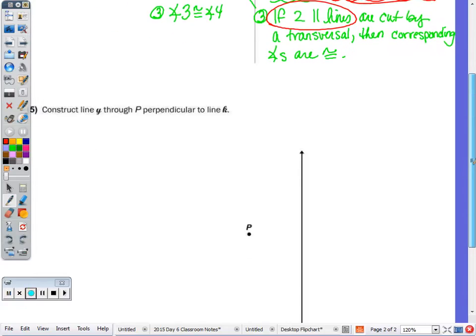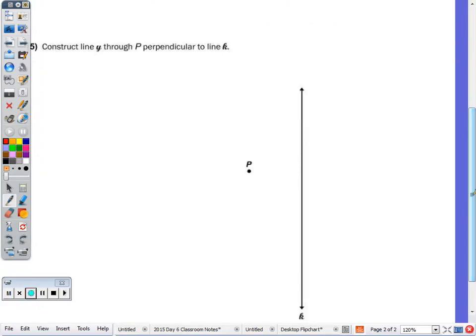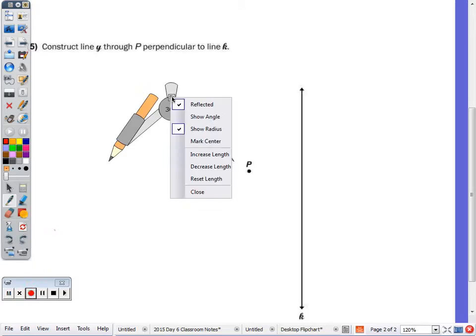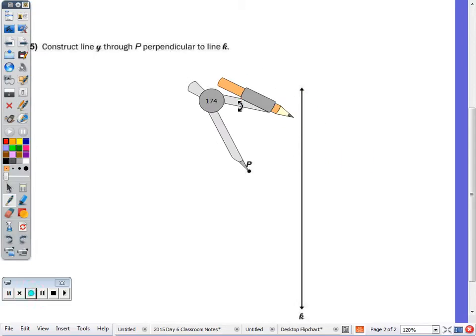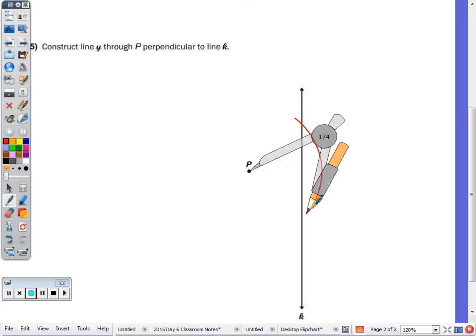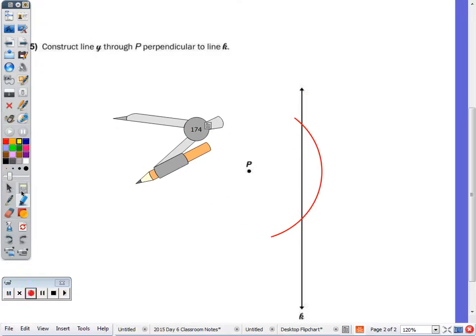Last one, the construction. Construct line Y perpendicular to line K through point P. So your first step with the compass is to put the point on P. And I want to make an arc that intersects the given line. Once again, this gives you a segment, with the two arcs as boundaries. So it gives you this segment from here to here. And then I'm going to bisect that segment. But since I already have point P, I don't need both of the X's.